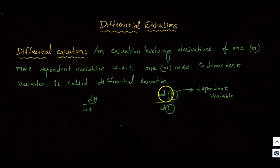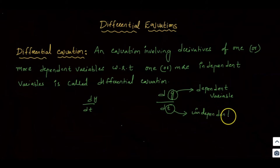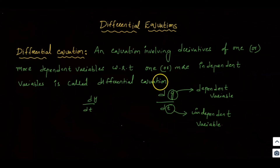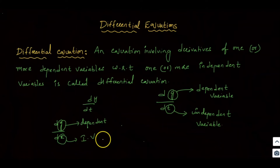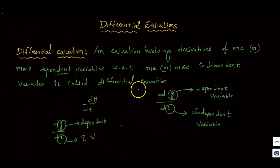For example, d y by dt — here y is called the dependent variable, and T (time) is called the independent variable, because T is in the denominator. Similarly for dy by dx: y is the dependent variable and x is the independent variable. So, the variable in the numerator is the dependent variable, and the variable in the denominator is the independent variable. Any equation involving derivatives of one or more dependent variables with respect to one or more independent variables is called a differential equation.